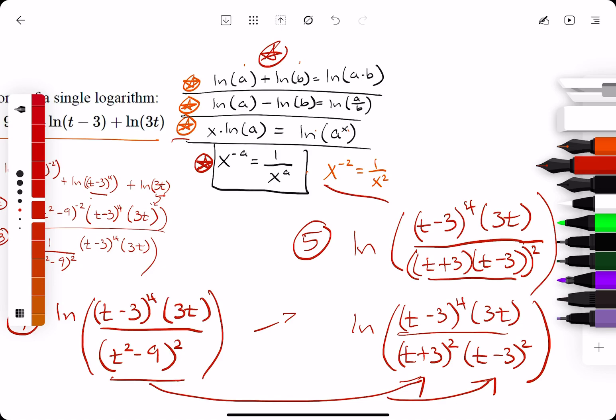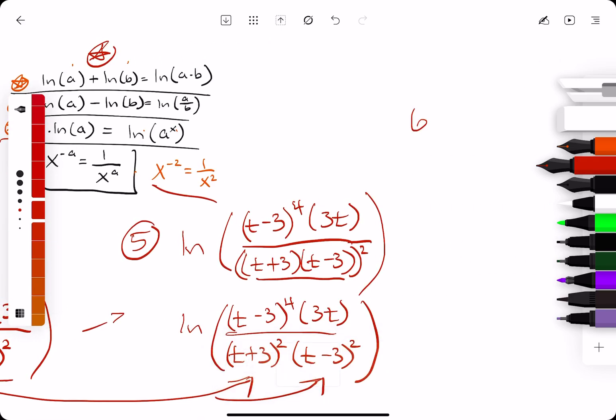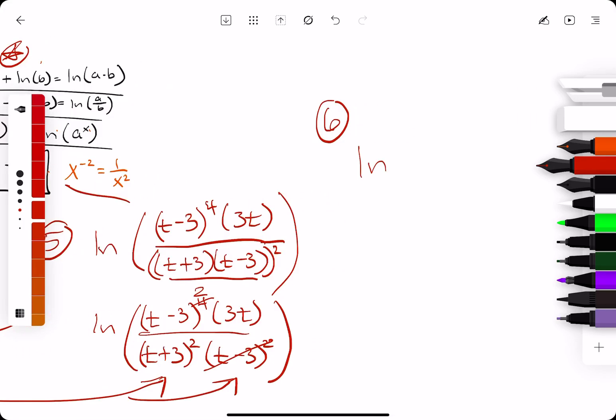So, now we're getting to our last step, 6, where we can cancel out some of the terms on top and bottom. So, we have t minus 3 to the fourth on top and t minus 3 to the second on the bottom. So, we can cancel out two of them from the bottom and the top, leaving us with t minus 3 squared on top. So, our final answer is ln of t minus 3 squared times 3t, all divided by t plus 3 squared. Now, let's see if we can identify this answer.